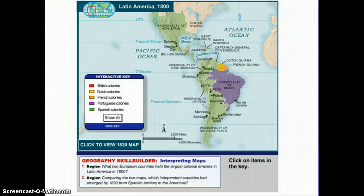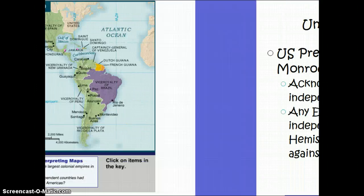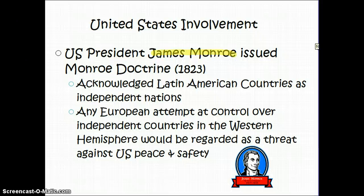The United States gained its independence from Britain, which was then a launch point for the French Revolution and for these revolutions in Latin America. Having been a country for only about 50 years — a blink of an eye in a country's lifespan — the US under President James Monroe recognized that these new countries, former Spanish, French, and Portuguese holdings, could be really good allies given their proximity and similar resources.